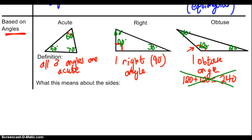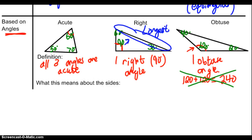We can also add a few things for right and obtuse triangles. We've learned that the longest side is across from the longest angle. So for a right triangle, the longest side is always across from that right angle — that's the longest side. For an obtuse triangle, the longest side is always across from that obtuse angle, because that will be the biggest angle.